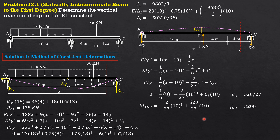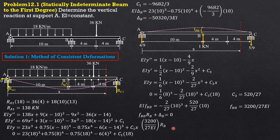Substituting into the compatibility equation: FBB times RB plus delta_B must equal zero. FBB times RB is the upward deflection which should numerically equal delta_B, so the final deflection at B is zero. So: (3200/27EI)·RB plus (−50320/3EI) equals 0. We can cancel EI and solve for RB. RB equals 141.525 kilonewtons.